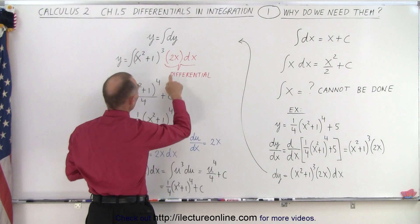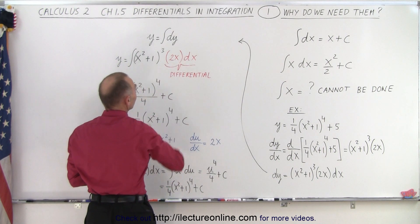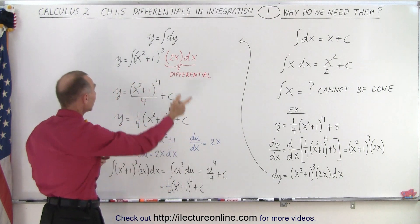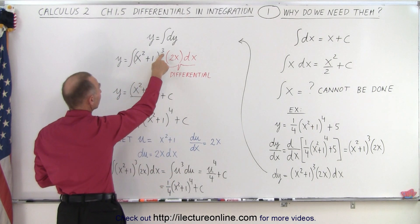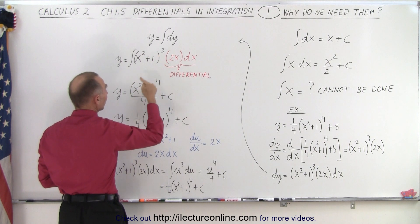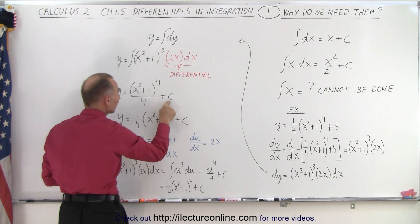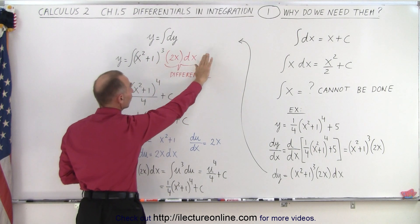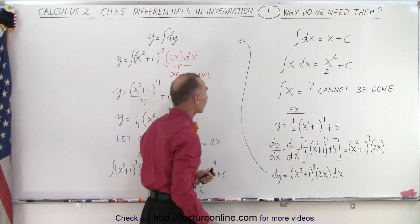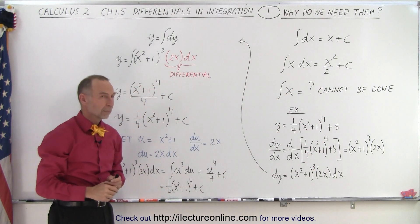So we're going to integrate this. Now notice I wrote two x and dx in a different color. This is called the differential. And now when we integrate this, we add one to the exponent. So we take x squared plus one to the fourth power divided by the new exponent plus the constant of integration and this simply disappears just like the dx disappeared in our example over there.